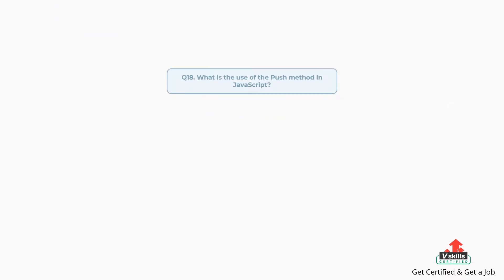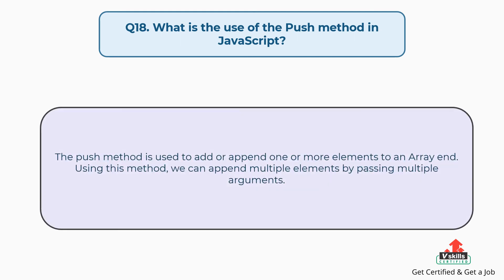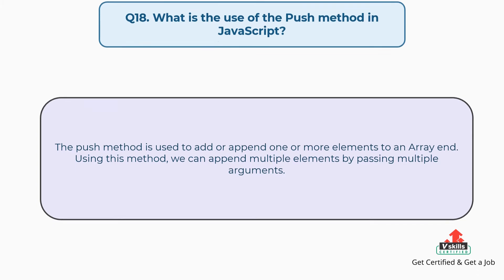Question number eighteen: what is the use of the push method in JavaScript? The push method is used to add or append one or more elements to an array. Using this method, we can append multiple elements by passing multiple arguments.